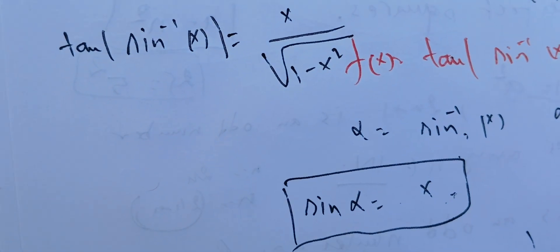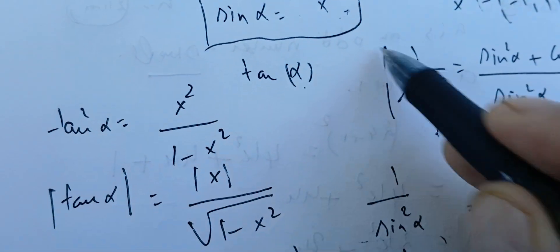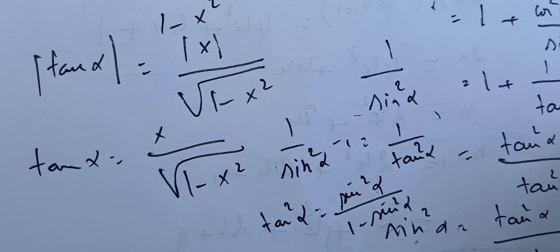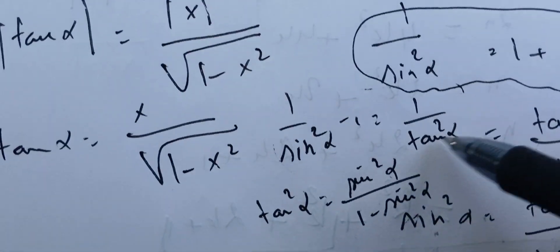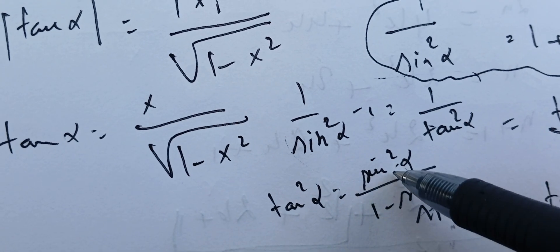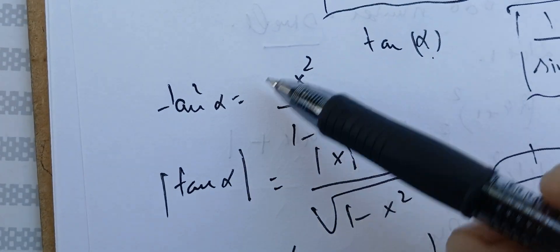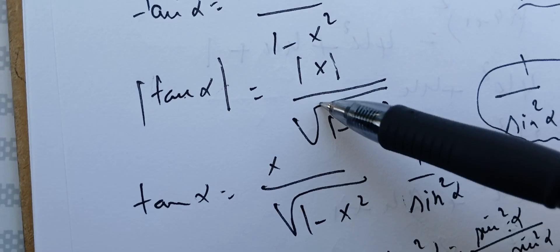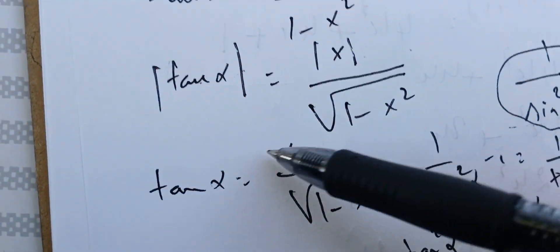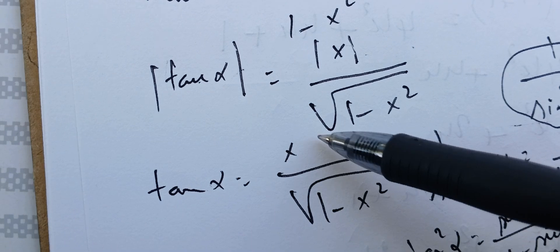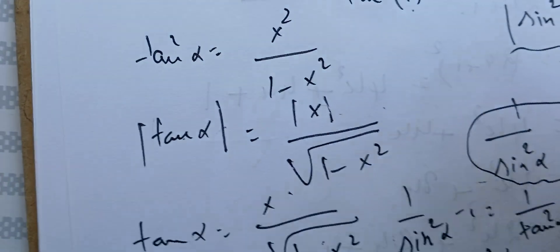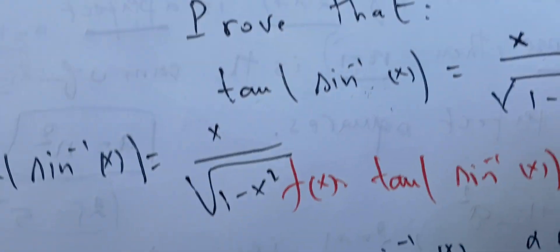The key idea was to use the identity relating 1/sin²(α) to tan(α). From there we solved for tan²(α), substituted sin(α) = x, took the square root of both sides to get the absolute value, and then used the sign argument to remove the absolute value and obtain tan(α) = x / √(1 − x²).